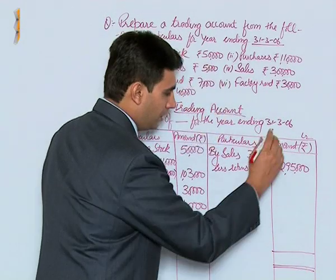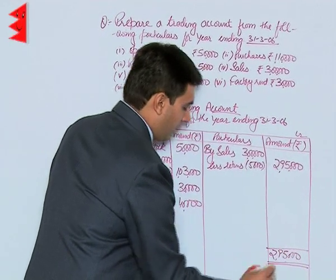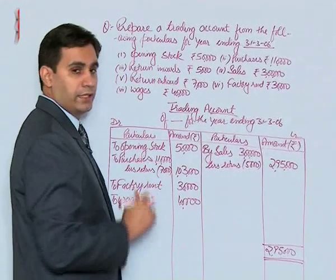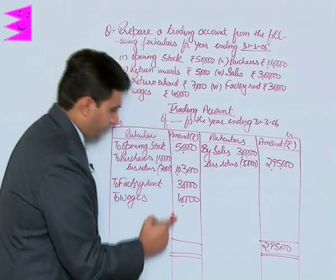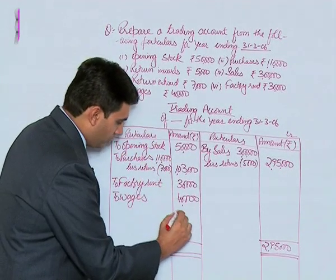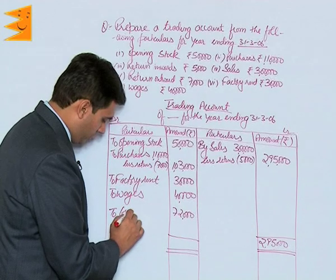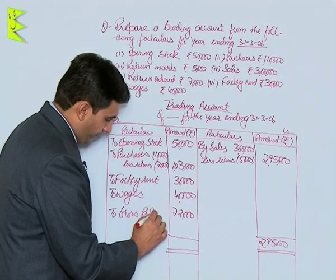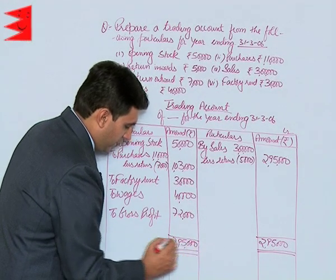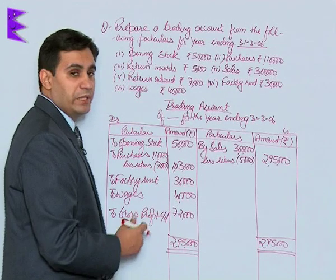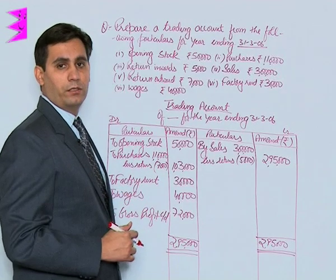Now let us total it out and find the profit. The total of the credit side comes to 2,95,000, which is greater than the debit side. Deducting the total of the debit side, we get 72,000 — this represents gross profit. The total is 2,95,000 on both sides. CD here means this profit would now be carried down for the calculation of net profit to the profit and loss account.